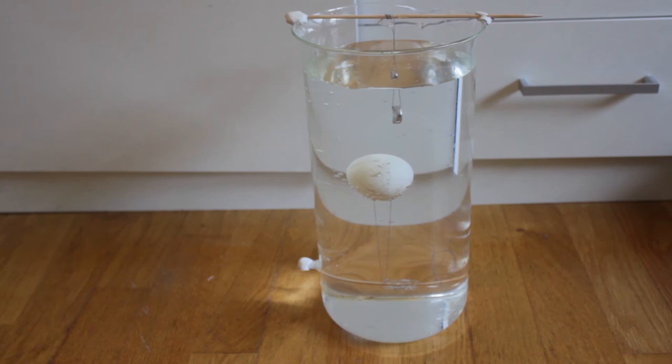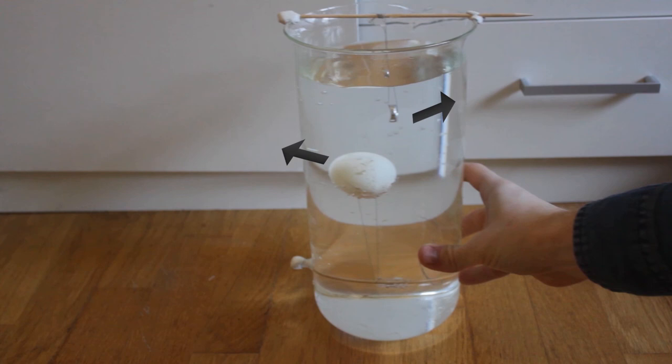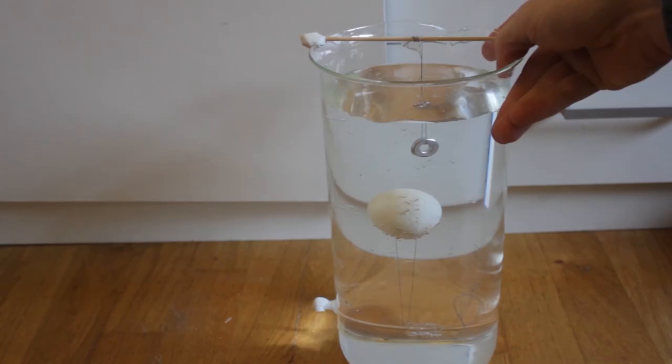It isn't easy to see, but let's try to tilt the object instead. There we have it. The helium balloon, or the ping pong ball, flies forwards when it's being accelerated, and the pendulum flies backwards.